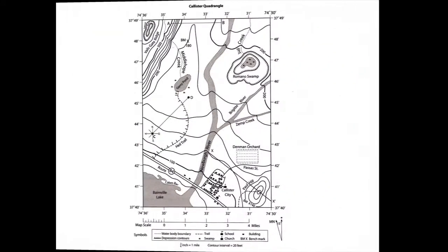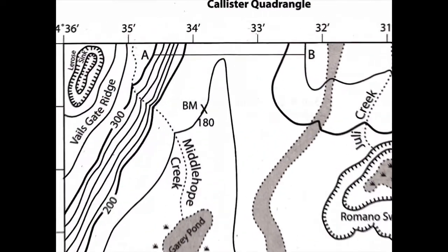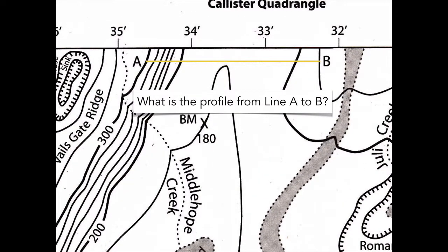Let's practice. So using our Callister Quadrangle map that we've been using, we're going to look at this line, A to B, and figure out what the profile is.